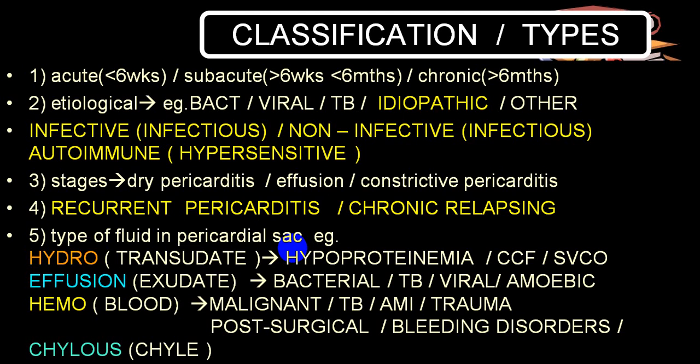If pericarditis recurs, we call it recurrent pericarditis, which is very common in malignancy, or there is a term called chronic relapsing pericarditis. Regarding pericardial fluid types: if it is a pure transudate, we call it hydropericardium. If it is an exudate — mainly in bacterial, tubercular, viral, or amebic cases — we call it pericardial effusion. Transudate occurs in congestive cardiac failure, SVC obstruction, and hypoproteinemia.